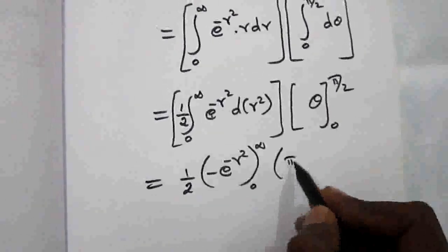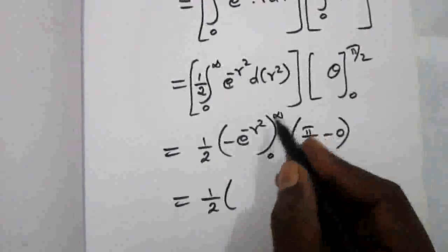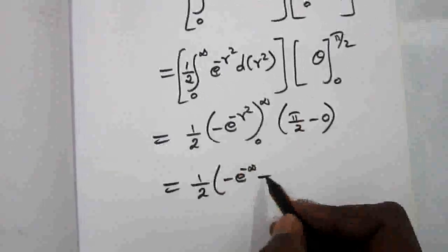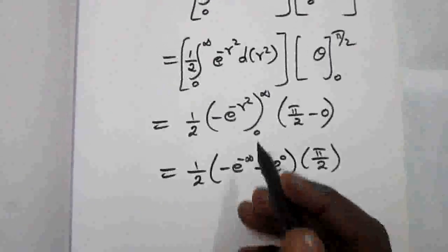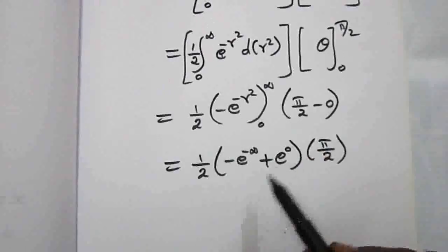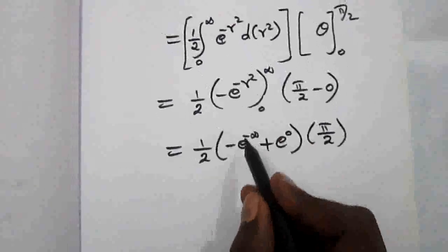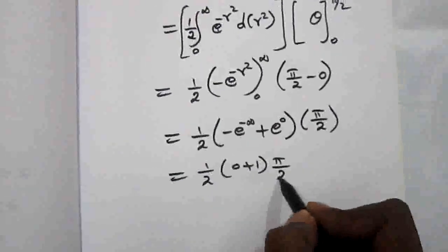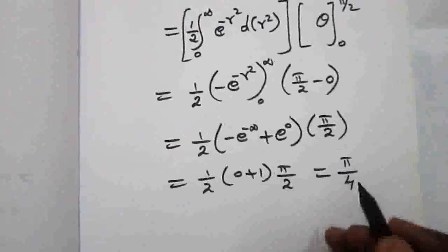Substituting limits: θ evaluates to π/2 minus 0. For the r integral: (1/2) times [e to the power minus infinity minus (minus e to the power 0)], into π/2. Since e to the power minus infinity is 0 and e to the power 0 is 1, this gives (1/2) times (0 + 1) times π/2, so the answer is π/4.